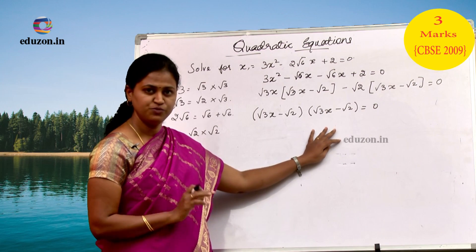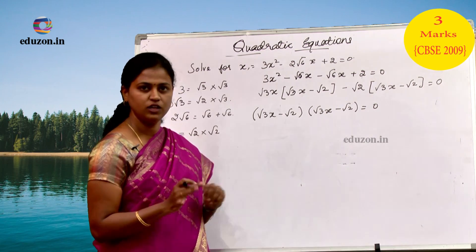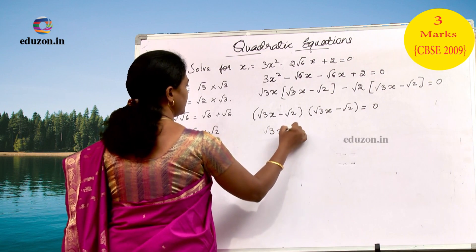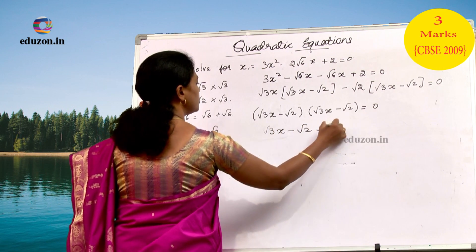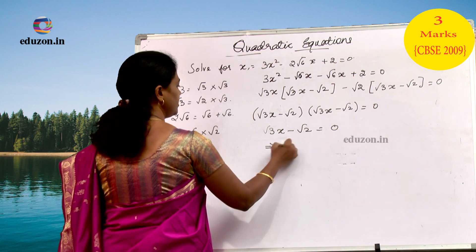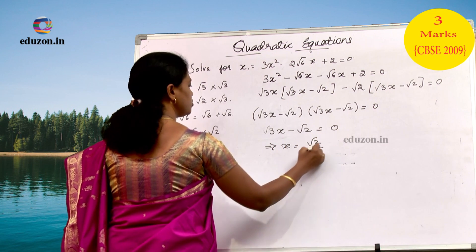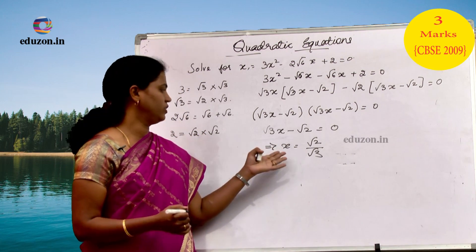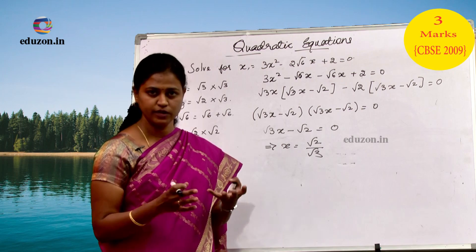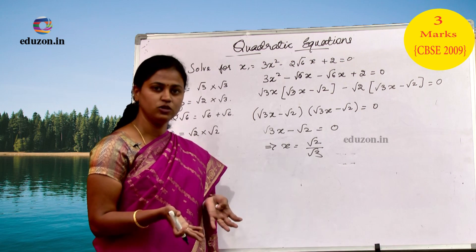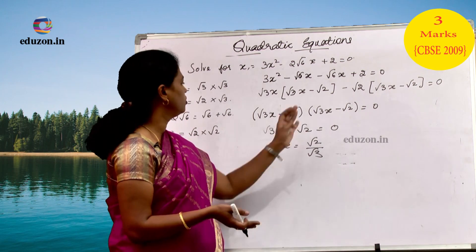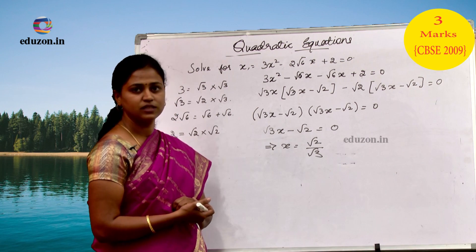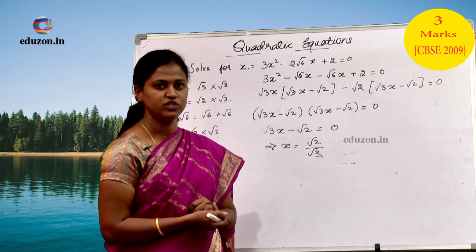Since both of them are equal, which means both the roots are equal. So root 3 into x minus root 2 equals 0, giving x equals root 2 by root 3. One of the roots is root 2 by root 3 and the second root is also root 2 by root 3. So, we have solved for x in the given quadratic equation.